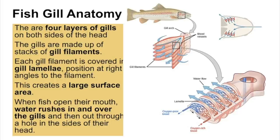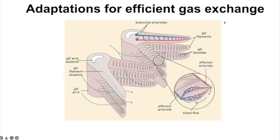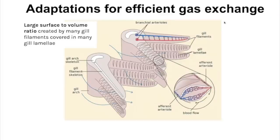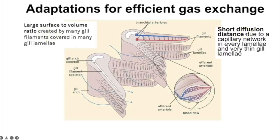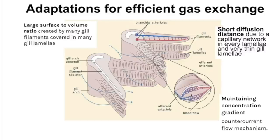When a fish opens its mouth while swimming, water rushes in and out through the sides of the head, flowing over the gills — over the four layers on both sides with their gill filaments and lamellae. The short diffusion distance is achieved by a network of capillaries within every gill lamellae, providing minimal distance for gas exchange.